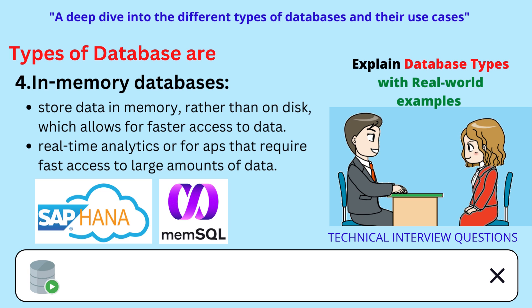Examples of in-memory databases include SAP HANA and MEM SQL. SAP provides an in-memory database called SAP HANA that is used by many organizations to store and manage data for various applications, including customer data, sales data, and other data, supporting fast data access and handling large amounts of data.